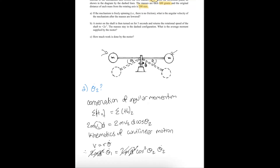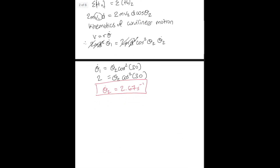Now let's go to Part B. A motor on the shaft is turned on for 3 seconds and returns the rotational speed of the shaft to 2 degrees per second. The masses stay in the dashed configuration. What is the average moment supplied by the motor? We know T₃ equals 3 seconds and θ̇₃ equals 2 degrees per second.